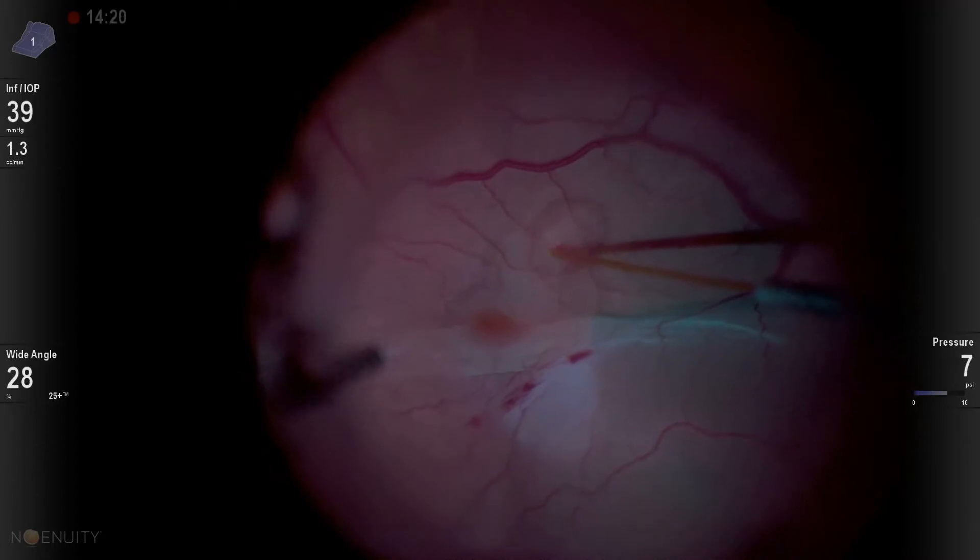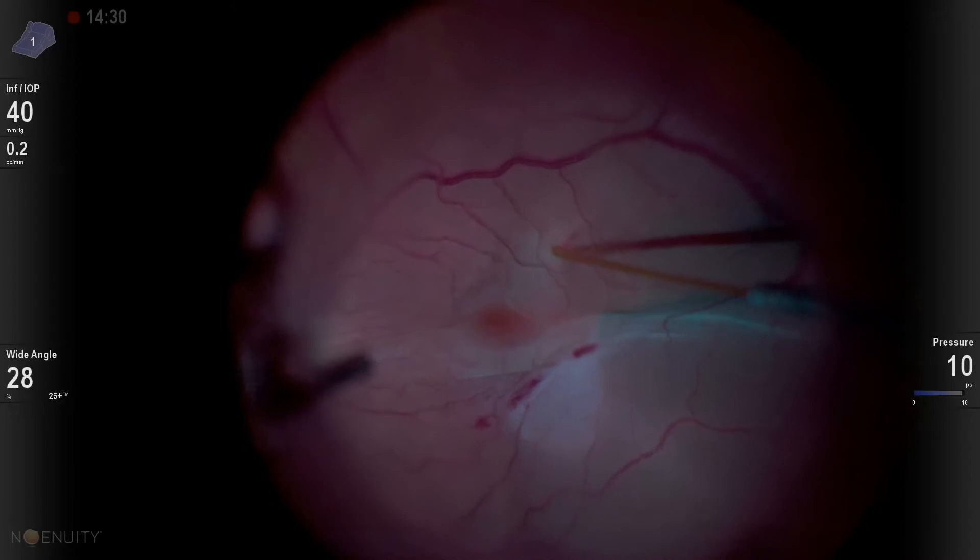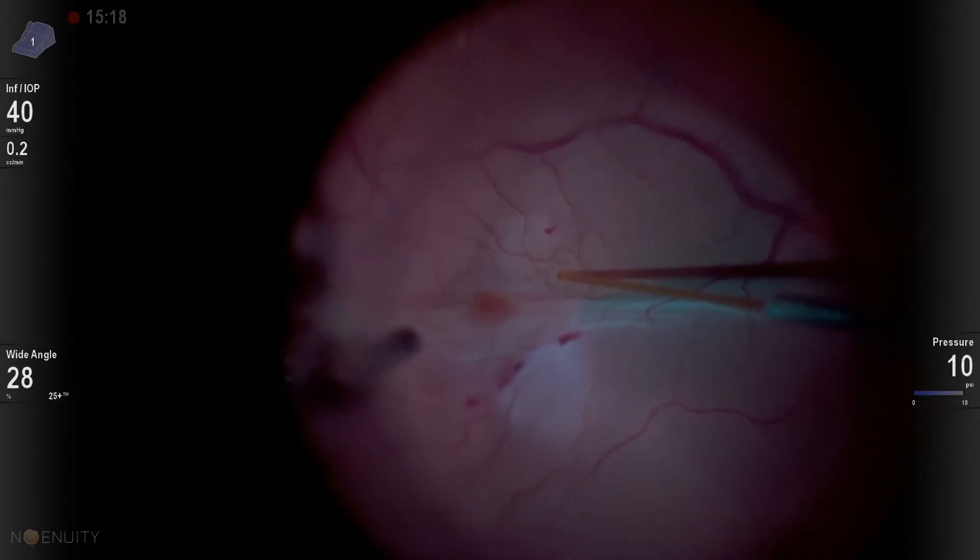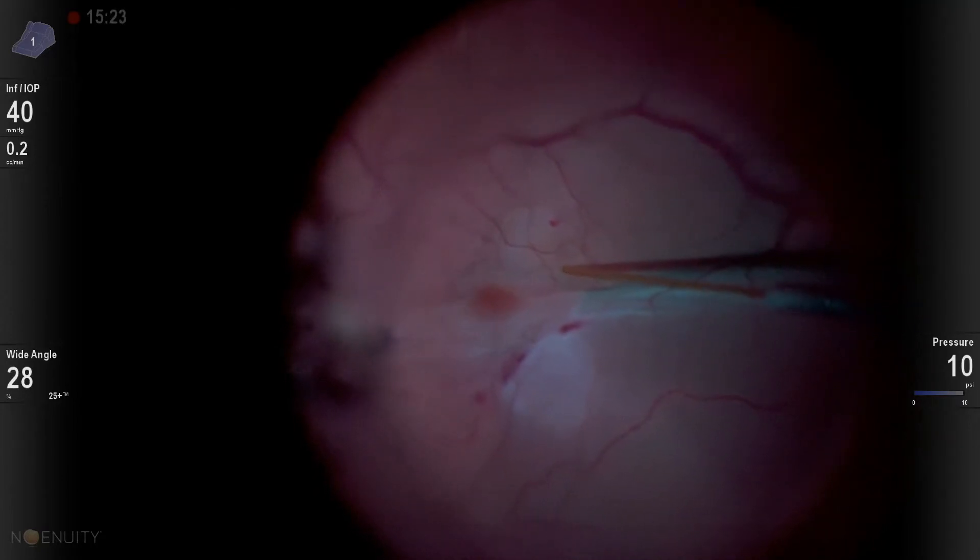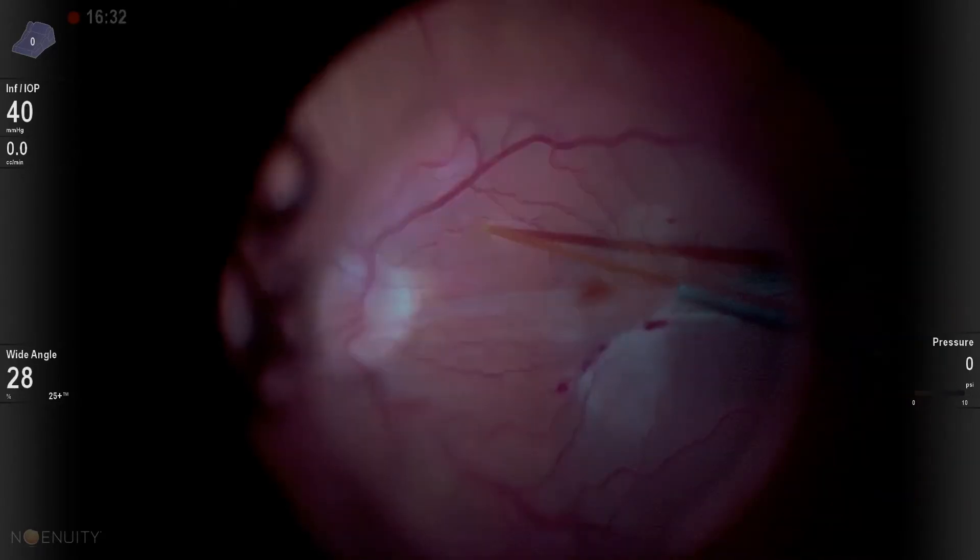But basically what ends up happening is that this bleb now goes out into the periphery. So the blebs are not wanting to go in and unfold the macula, and I tried a third time. Now I'm temporal to the fovea, straight temporal here, and all I get is my fluid dissecting into my larger, more peripheral bubble.